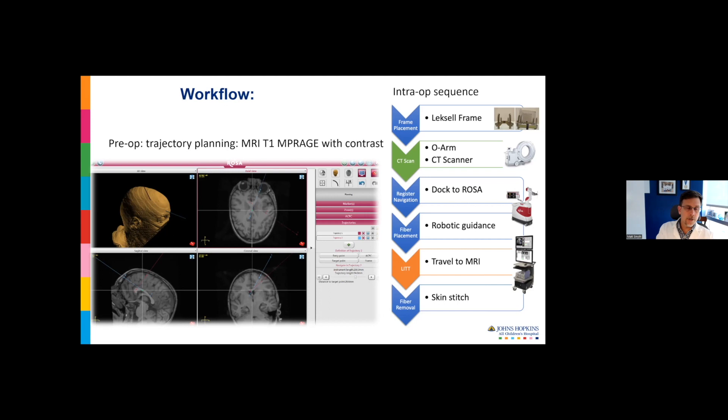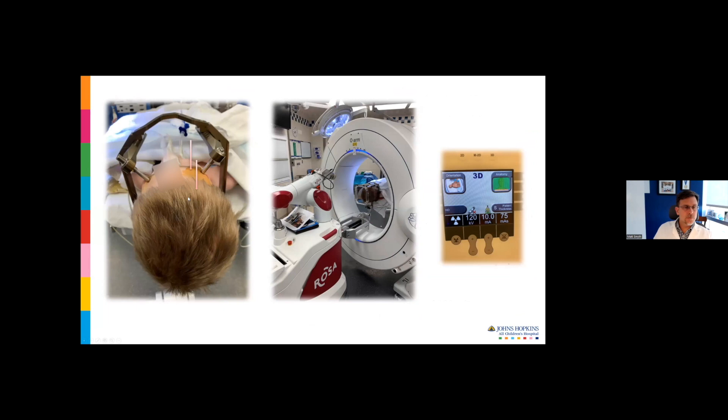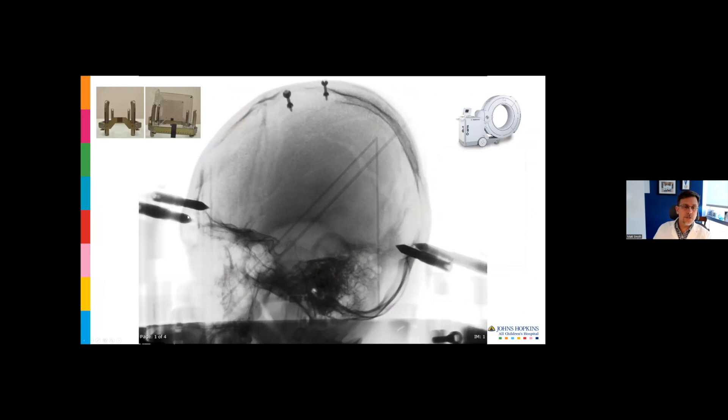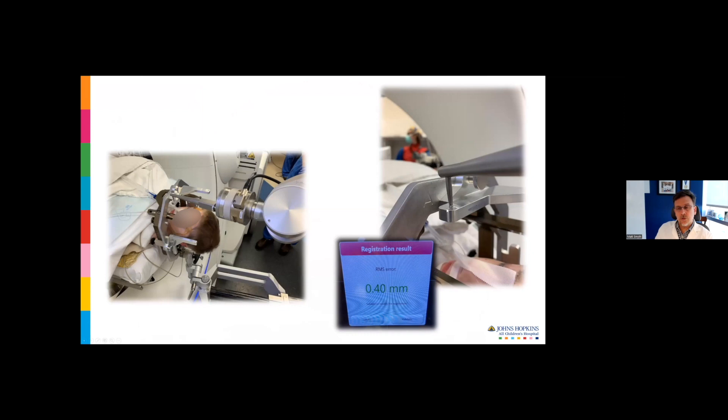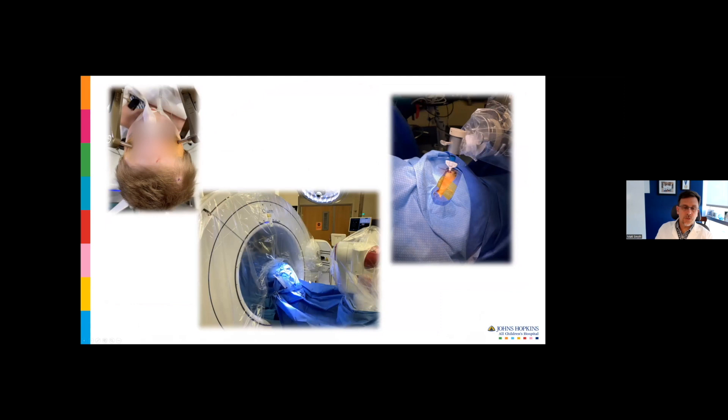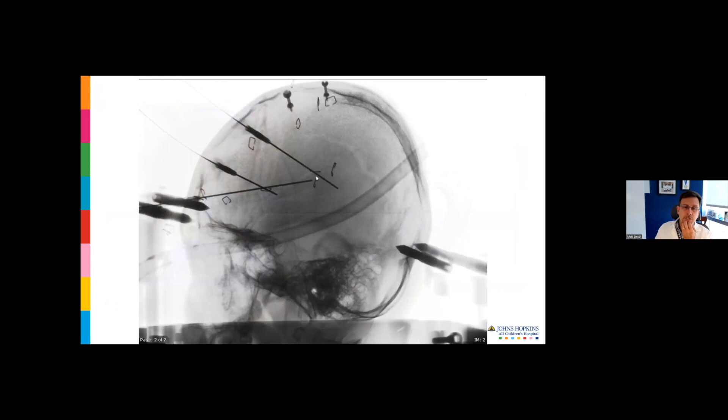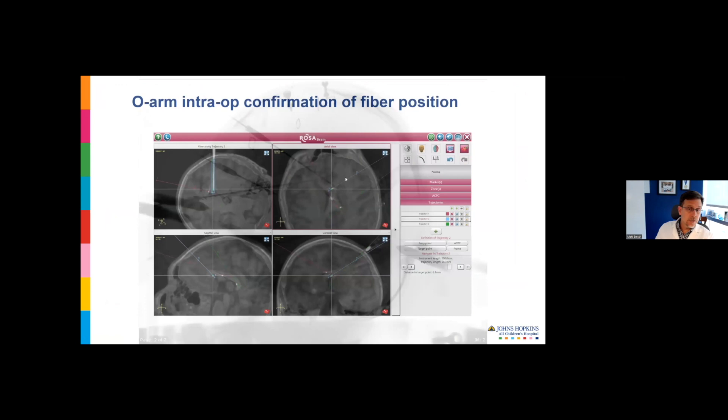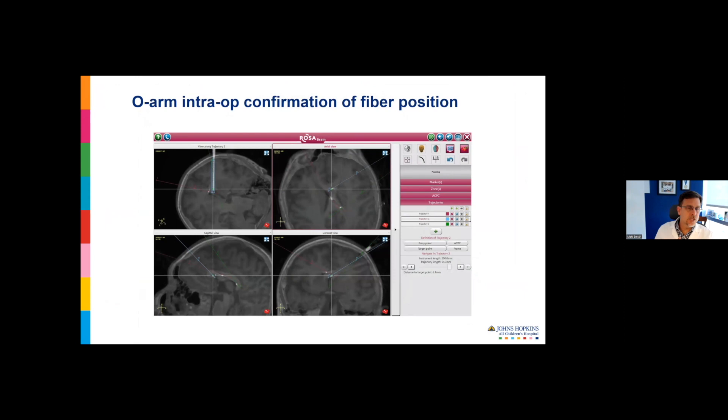The workflow: placing the patient in the Leksell frame, putting on the CT fiducial box, getting an O-arm or CT scan, then docking to Rosa to do the registration, robotic guidance to place the fiber. Then you disconnect from the surgical platform, go to the MRI scanner to do your ablation. In the scanner, you can remove the bolt and tie down the skin stitch, so you don't need to go back to the operating room. You can free up the operating room for another case after the first couple of hours.